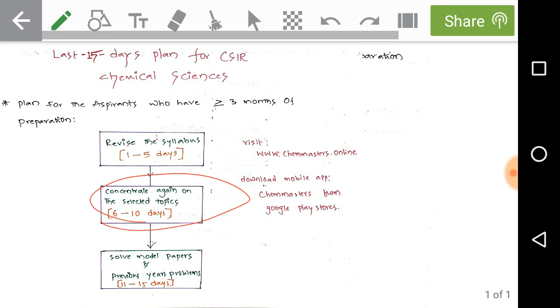In the second part concentrate again on the selected topics. So here the selected topics means simply the very important topics on which we are getting the problems frequently in the CSIR chemical sciences.